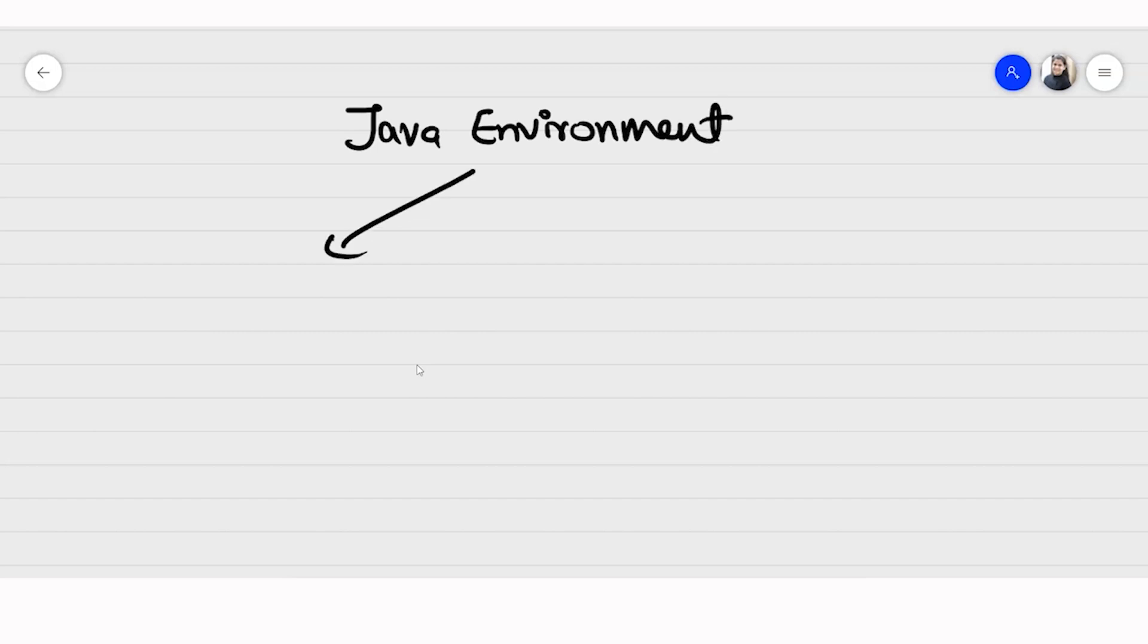Basically our Java environment has two things. First thing we can say is JDK and then JRE. These are the two important parts of the Java environment.